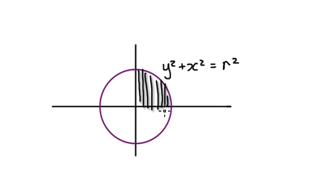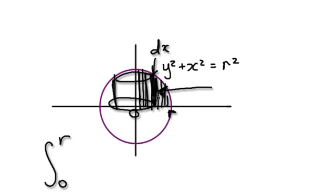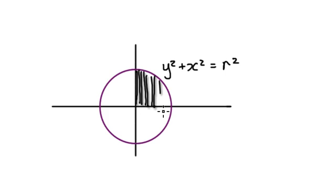When you sum up all the cylinders, you're really summing all the way from 0 to r. The thickness of each cylinder is dx. When it comes to working out the height, it's a lot easier to work out this height than the other. The point is: it's easier to sum up all the cylinders, work out half of a sphere, and then multiply by two at the end.